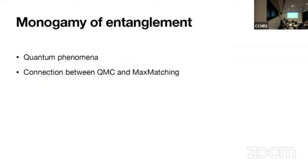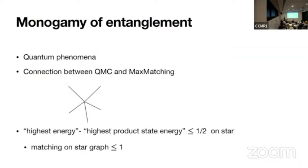All right, so another important factor that we use in this paper is monogamy of entanglement. It's a quantum phenomena, and it gives a connection between quantum max cut and maximum matching. So consider this star graph, then the highest energy minus highest product state energy is always at most one-half on a star graph, regardless of the degree. So, for example, if you consider just a single edge, the highest energy is one, but the highest product state energy is one-half, so it satisfies, it saturates this inequality, actually.